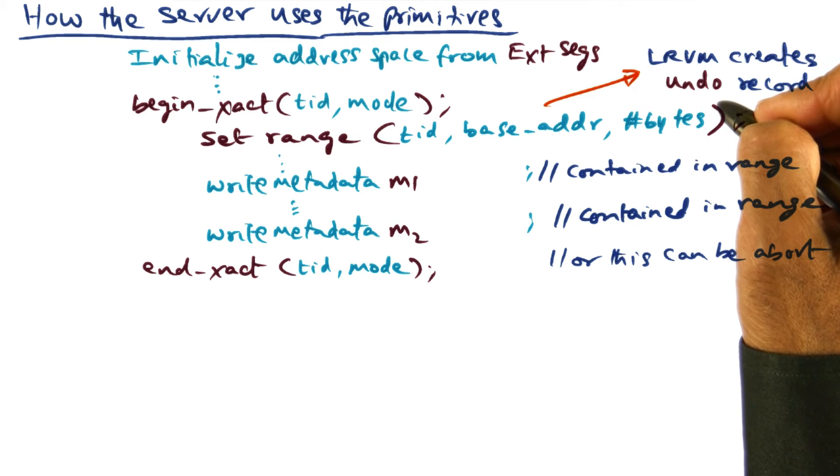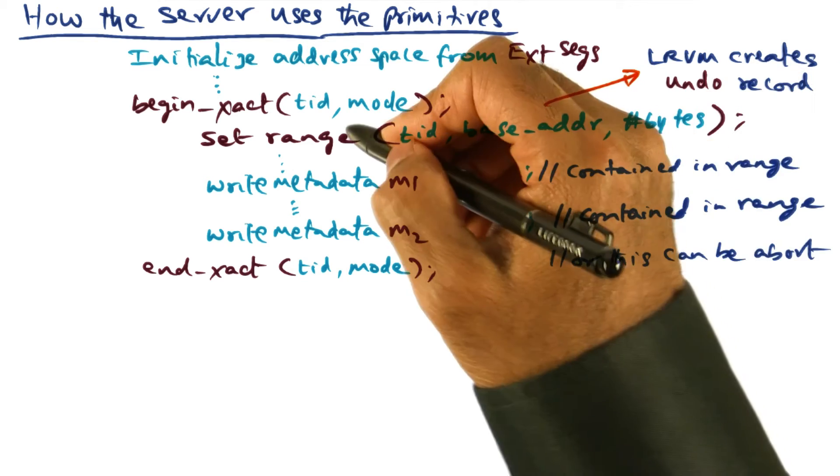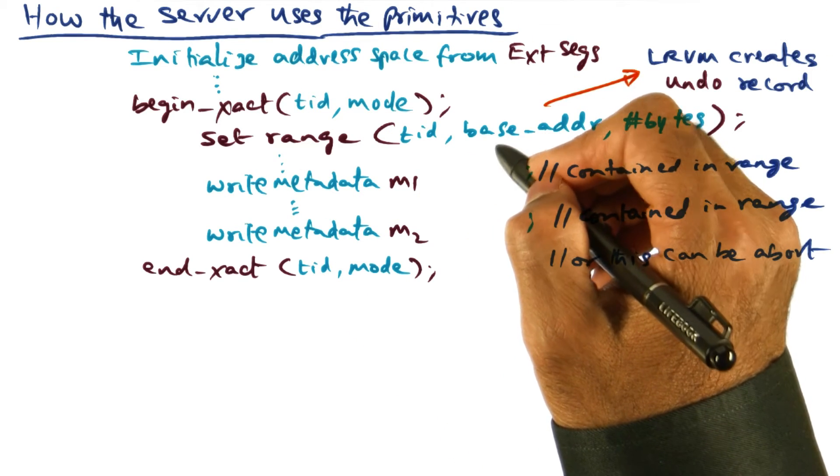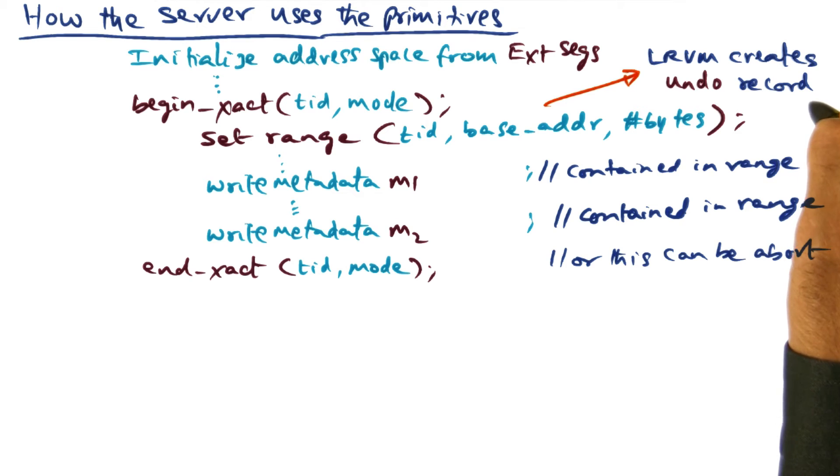So again, we want to make sure that these primitives are performant. This is one of the ways by which the application developer can make sure that LRVM does not do unnecessary work.